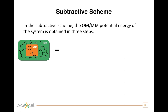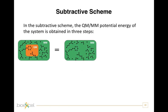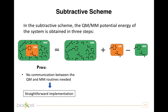In the subtractive scheme, the potential energy of the QM/MM system is obtained in three steps by performing three independent calculations. First, the energy of the total system is evaluated at the MM level, for example at force field level. Then, the energy of just the isolated quantum subsystem is calculated at quantum level and added to the previous result. Finally, the MM energy of the quantum subsystem is subtracted, to avoid counting twice the interactions within the quantum subsystem. The main advantage of this QM/MM coupling scheme is that no communication is required between the quantum mechanical and the classical routines, making the implementation relatively straightforward.